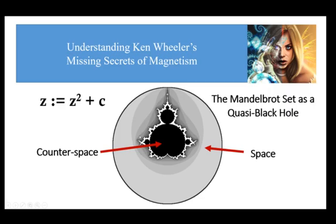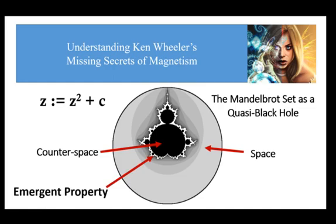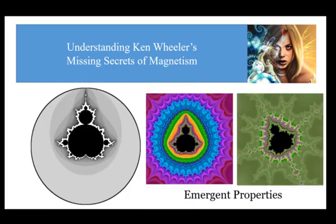The fuzzy boundary that separates space and counterspace can be considered as a domain separator — it separates the domain of space from the domain of counterspace. In the model I am proposing, all domain separators have the property of self-similarity, and therefore they are fractal in nature. Thus, self-similarity is an emergent property of the principle of incommensurability. In the case of the Mandelbrot set, all the pretty Mandelbrot set images you find on the internet come from this region, the domain separator. Domain separators are emergent properties of the interaction between space and counterspace.